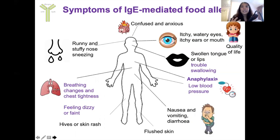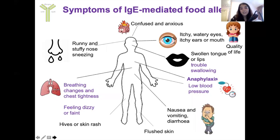Symptoms of IgE-mediated food allergy can include itchy watery eyes, itchy ears or mouth, runny nose, sneezing, hives or a skin rash, nausea, vomiting or diarrhea, flushed skin, and swollen tongue or lips. In more severe cases, known as anaphylaxis — which can be potentially fatal — symptoms can include breathing difficulties, chest tightness, feeling dizzy or faint, low blood pressure, or trouble swallowing.